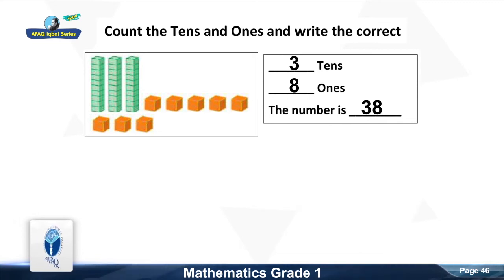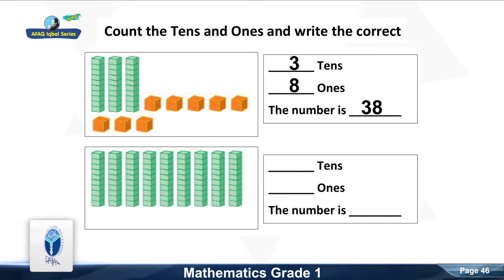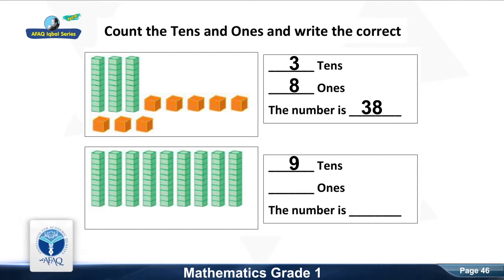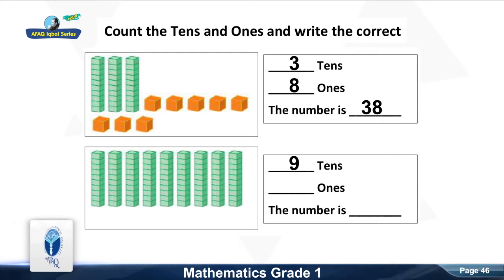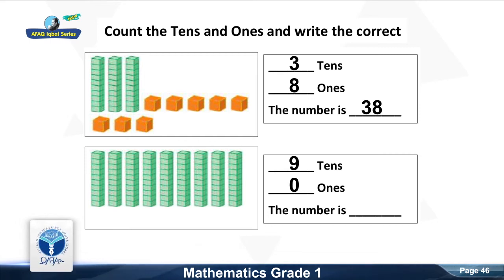Next question, count the tens. Good, it is nine tens. Count the ones. Good, it is zero ones. The number is ninety.